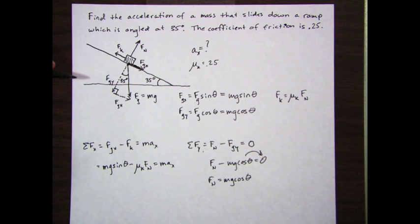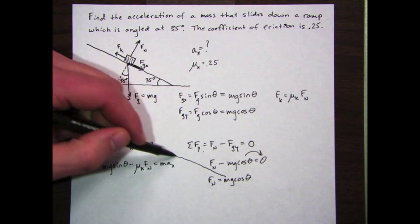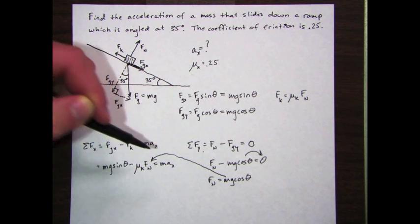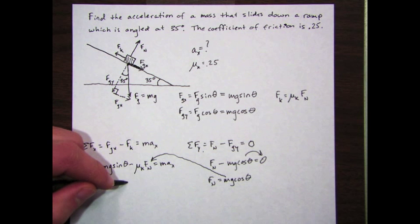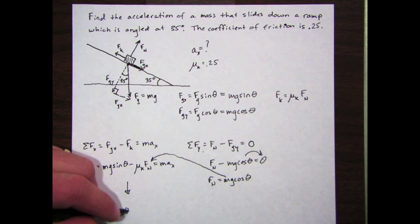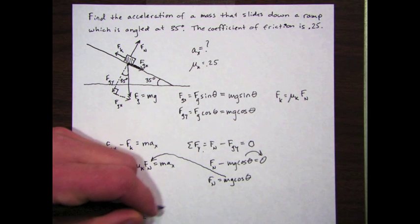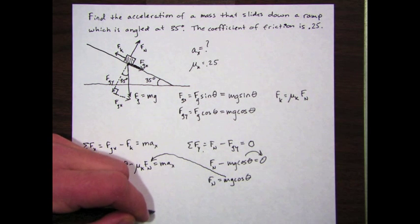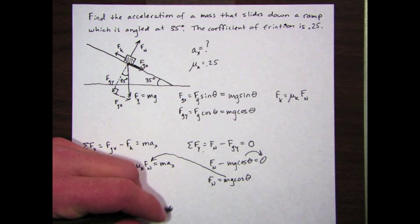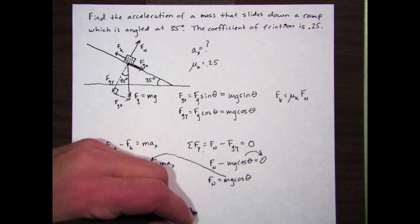When I move this to the other side, I find out that that is the normal force, mg cosine theta. I can take that and plug it in. So let's move down just a little bit and I get mg sine theta minus mu k times mg cosine theta equals m a x.